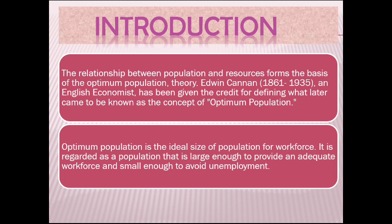The relationship between population and resources forms the basis of the optimum population theory. Edwin Kannan, an English economist, has been given the credit for defining what later came to be known as the concept of optimum population.